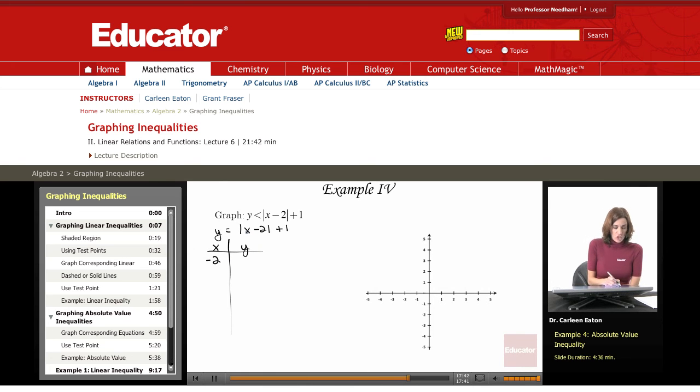So when x is negative 2, that's going to give me negative 4, the absolute value of that is 4, plus 1 is 5. Negative 1 minus 2 is negative 3, the absolute value is 3, plus 1 is 4. 0 minus 2 is negative 2, the absolute value is 2, plus 1 is 3.